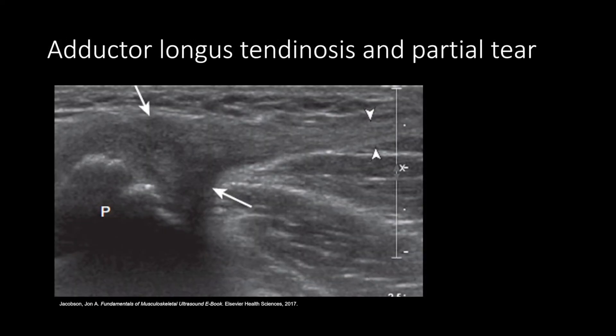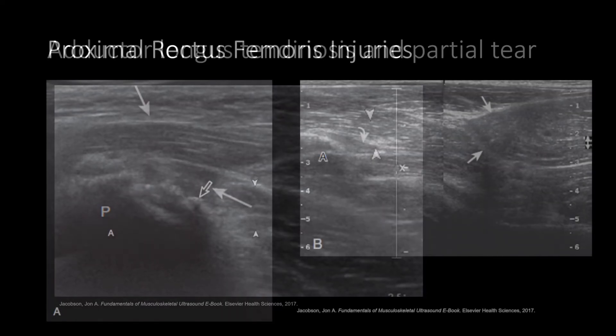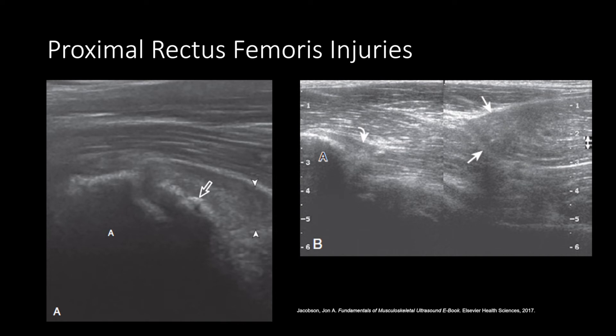This is a long axis view of the adductor longus tendon with tendinosis and interstitial tears. The arrowheads show normal distal adductor tendon. Here on the left image, this shows a long axis view of the direct head of the rectus femoris with cortical avulsion at the open arrow from the anterior inferior iliac spine. The right image shows a full thickness tear of the rectus femoris, denoted by the arrows, that is retracted from the origin denoted by the curved arrow.